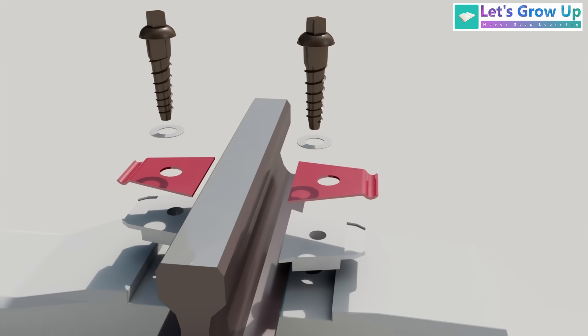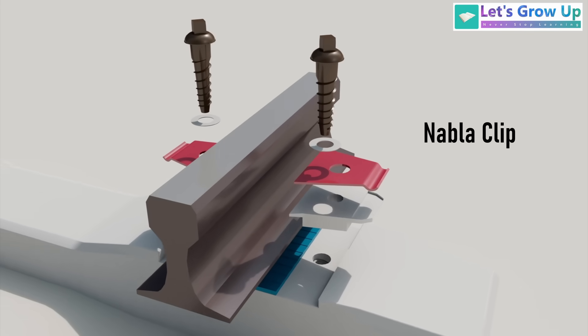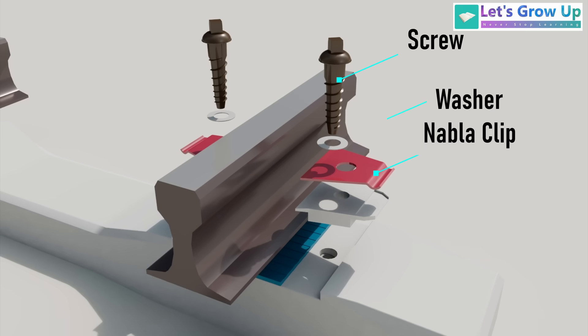A Nabla clip system consists of the Nabla clip itself, a screw, a washer, an insulator, a rail pad, and a concrete sleeper.